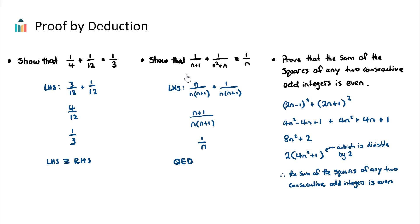The last example is an extension on the basic proof by deduction questions. It says to prove that the sum of the squares of any two consecutive odd integers is even. We start by defining two consecutive odd integers as (2n − 1) and (2n + 1), because 2n is always even, subtracting 1 gives an odd number, and adding 1 gives the next consecutive odd number. So 2n − 1 and 2n + 1 are defined as our two consecutive odd integers, and we want to prove the sum of their squares is even.